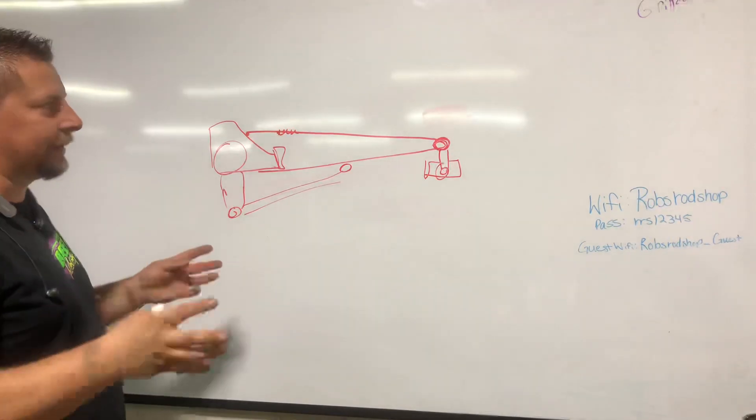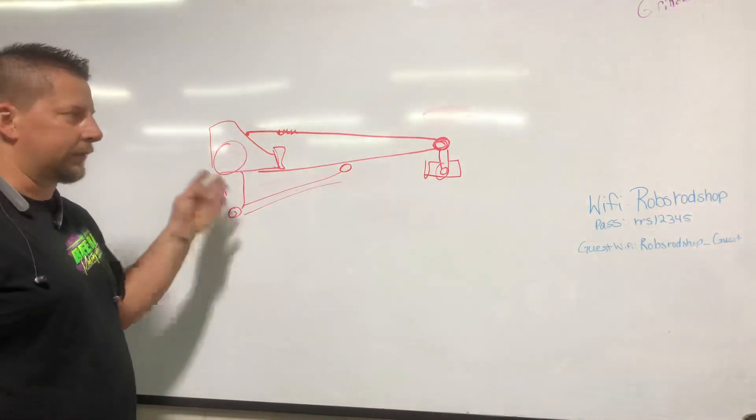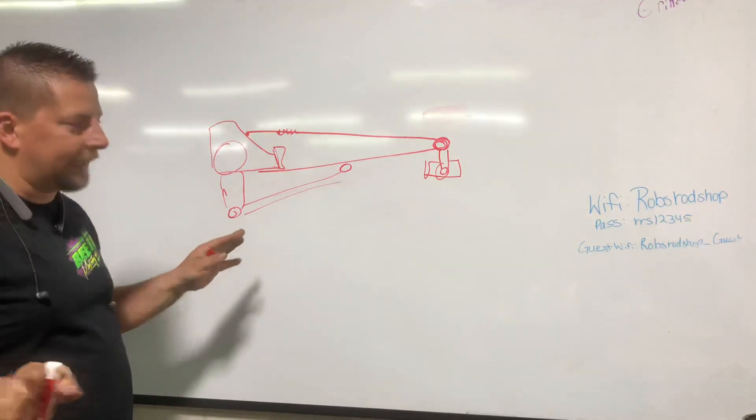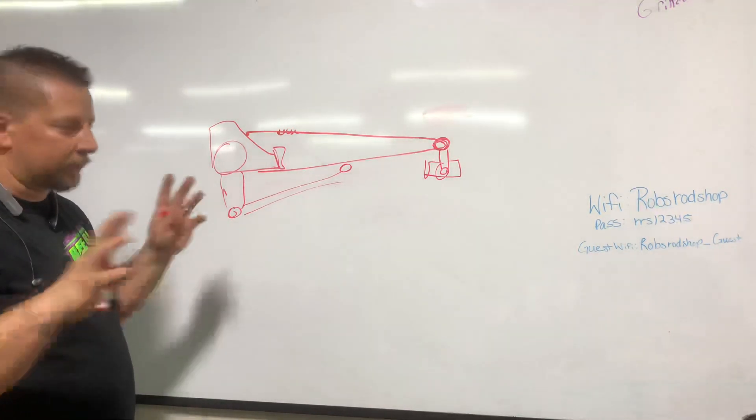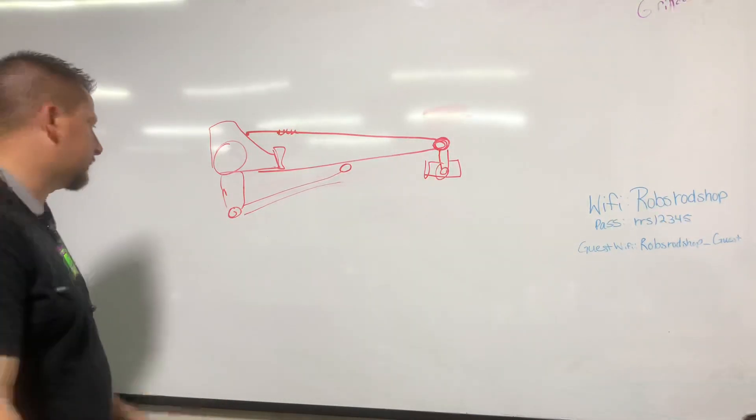It's not going to give you any more bite, it's not going to give you any more separation, it's not going to do anything—just set the pinion angle up to make the u-joints live. All of your adjustment for bite is going to come out of this lower control arm.